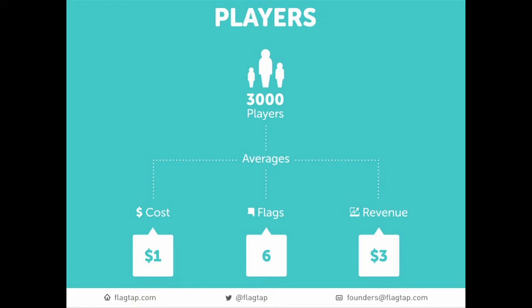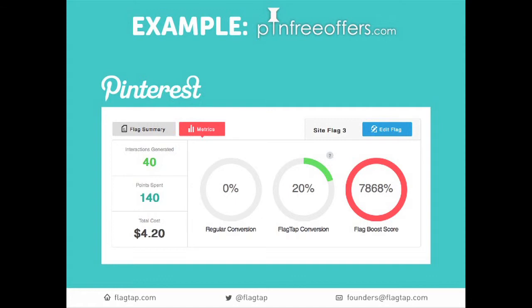What we're seeing is that our players are costing, on average for acquisition, about $1. They're capturing, on average, about six flags, which means those active players are worth about $3 each. But it's not just about value to FlagTap — it's about the kind of value we're driving to the website. I want to show you a case study for a website called pinfreeoffers.com. They get about 10,000 users per day and they partner with big brands to drive leads via Pinterest. By integrating FlagTap, they increased those lead generations — their primary source of revenue — by 8%, and it cost them $4.20. We gave them the power to create a flag for pinning those offers on Pinterest and increased how many people did it. We think examples like this are just scratching the surface of FlagTap's potential.